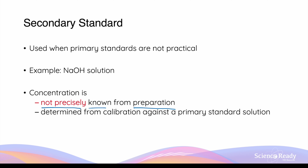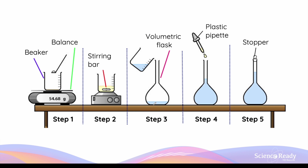Now let's talk about the steps involved in making a primary standard solution. Ideally, the primary standard should be available in a solid state, allowing convenient and accurate measurements before dissolving. Step one is to perform the relevant calculations to determine exactly how many grams of the chemical to dissolve. We then measure it in a beaker, stir to encourage full dissolution, transfer to a volumetric flask, top up to the indicator mark, stopper, and invert to homogenize.